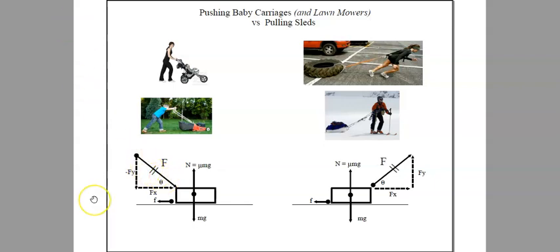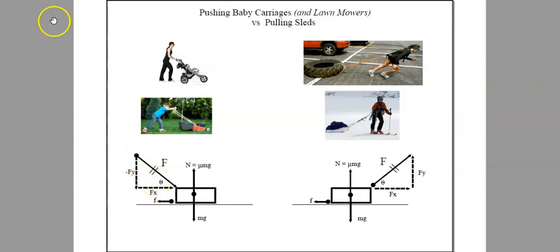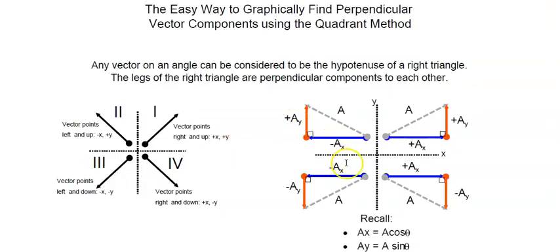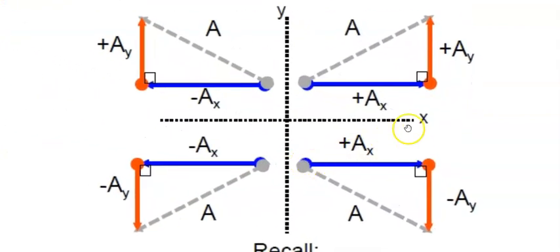In all the problems we've dealt with so far, the applied force was horizontal and parallel to the surface. But now we're going to deal with forces that are not parallel to the surface — they're on an angle. We're going to need to resolve vectors so that we can have exclusive X and exclusive Y components. A few videos back I taught you the quadrant method for finding the perpendicular components of any particular vector.